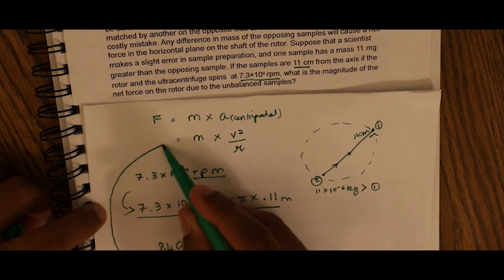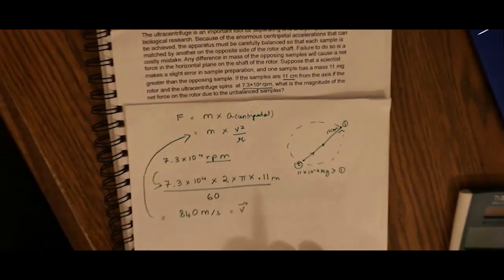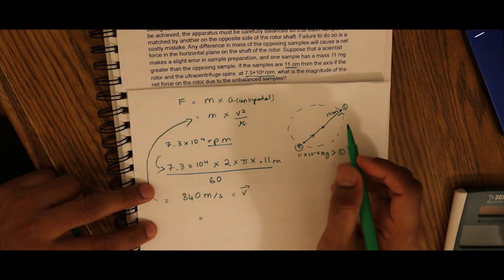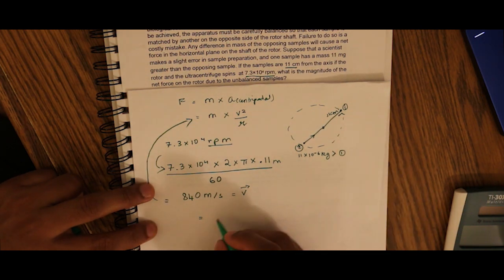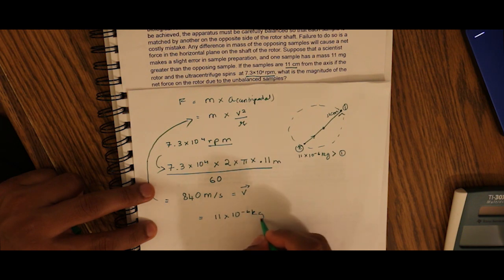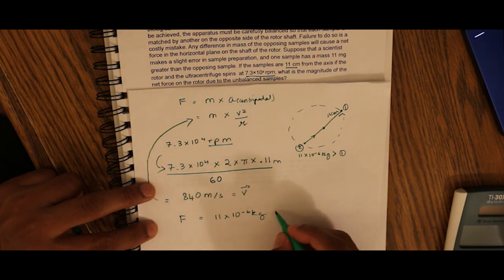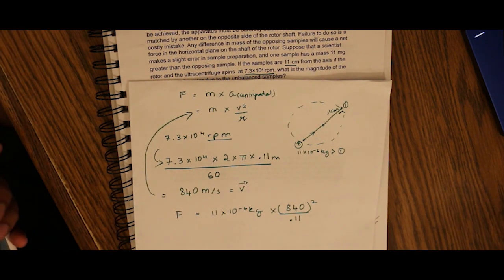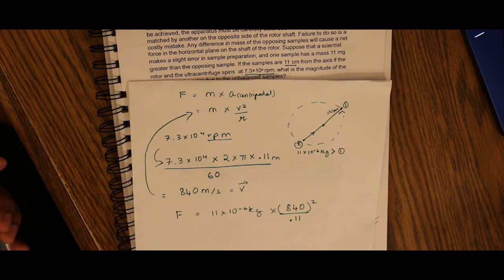We plug this value back into our force equation. Our mass is 11 milligrams greater, so the mass is 11 times 10 to the negative 6 kilograms. The force equals mass times velocity squared divided by radius — so that's 11 times 10 to the negative 6, times 840 squared, divided by 0.11.